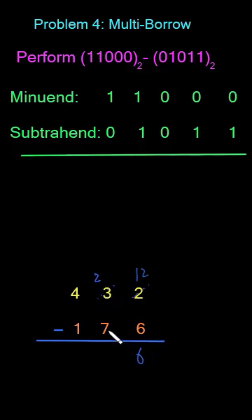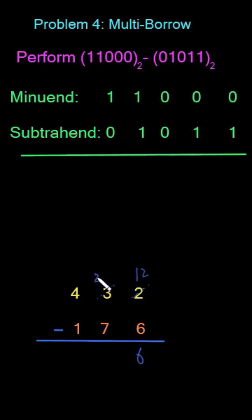Now I have to subtract 7 from 2, which isn't possible. So I have to go to the next column and borrow one. Borrowing one from the next column to the current column in decimal is equal to 10, and 10 plus 2 will give me 12. Now 12 minus 7 will give me 5, and this column is left with 3. So 3 minus 1 will give me 2.